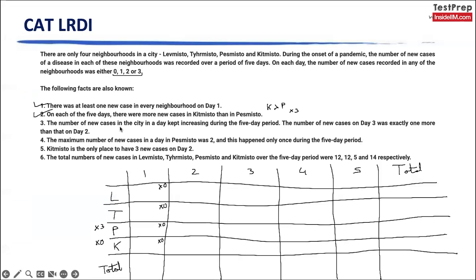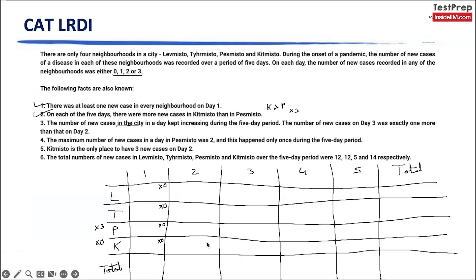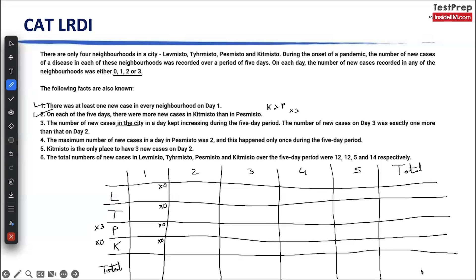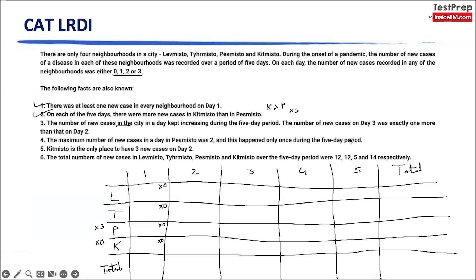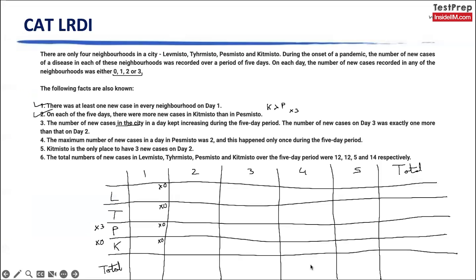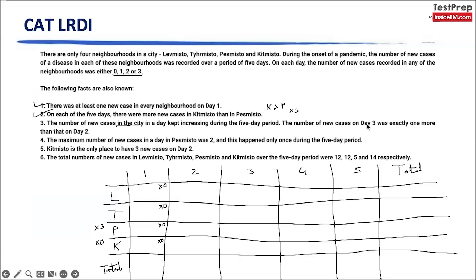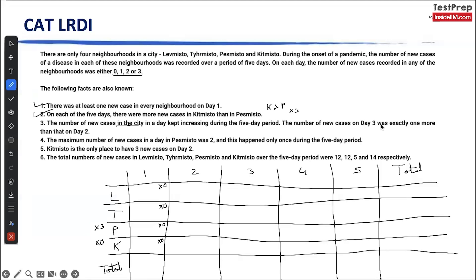The number of new cases in the city — not the neighbourhoods, meaning the total — kept increasing during the five-day period. So day 5 > day 4 > day 3 > day 2 > day 1. The number of new cases on day 3 was exactly one more than day 2 — so if day 2 is x, day 3 is x plus 1.